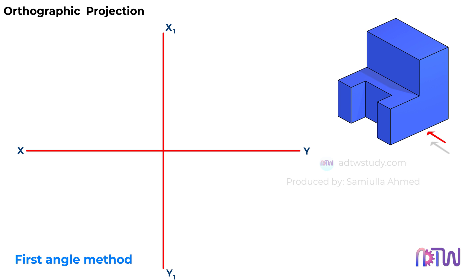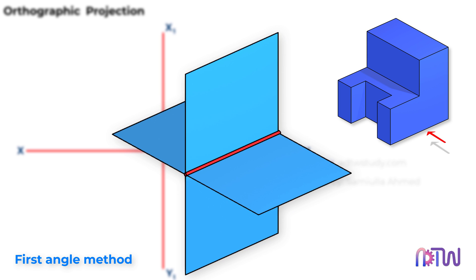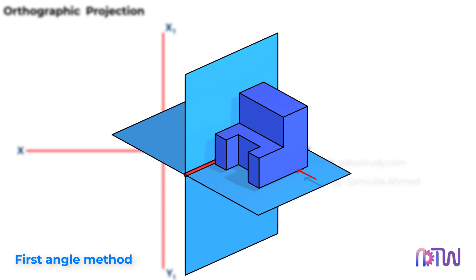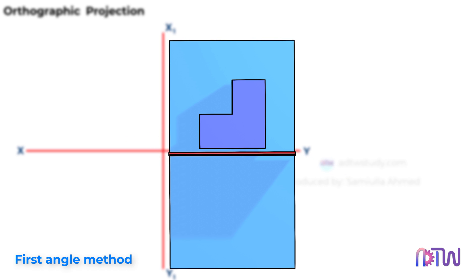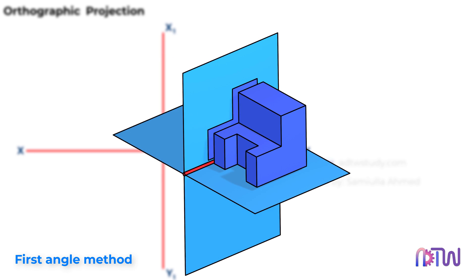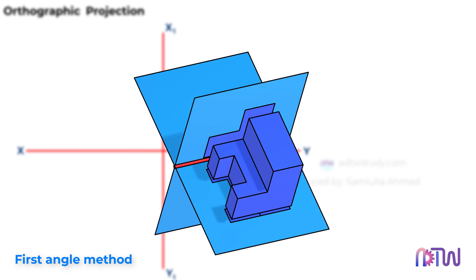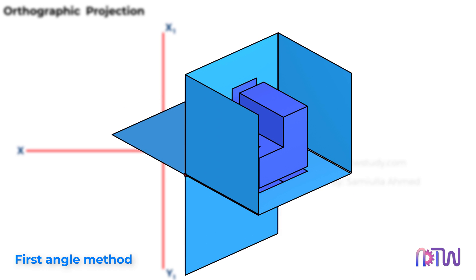Let's recap how the object is visualized in the first angle method. In the first angle method, we consider the object to be placed in the first quadrant, and the viewer is viewing the object from this direction. When the object is viewed from this direction, the front view will look like this. When the viewer views the object from the top, it will look like this. For the side views, we consider two reference planes placed like this.